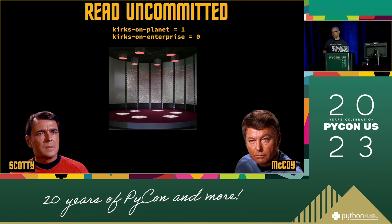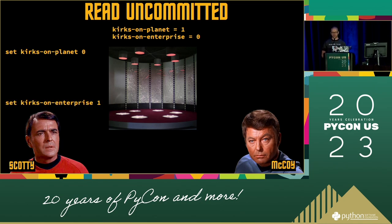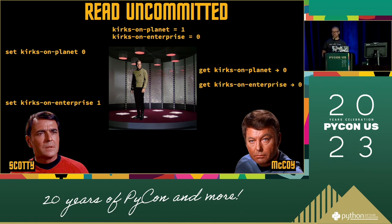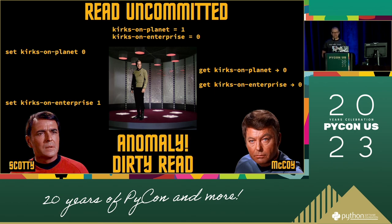We'll start off with the lowest isolation level: read uncommitted. Let's say Kirk is down on the planet and McCoy wants to beam him up. He updates the ship's computer: Kirk's on-planet equals 1, on-Enterprise equals 0. Scotty updates Kirk's on-planet to 0 and on-Enterprise to 1. But McCoy, meanwhile, checks and gets Kirk's on-planet as 0 — because Scotty already updated that — then gets Kirk's on-Enterprise as 0, because Scotty hasn't updated that yet. This is an anomaly called a dirty read: McCoy is seeing data from a transaction that Scotty has not yet completed.